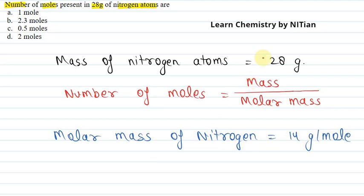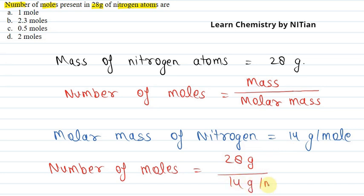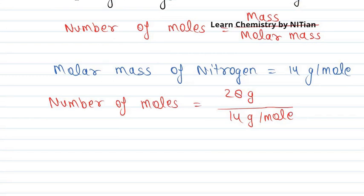Now we can calculate the number of moles. Number of moles equals given mass 28 grams divided by nitrogen's molar mass 14 grams per mole. The grams cancel, mole goes to the numerator, and 28 divided by 14 equals 2. So this becomes 2 moles. Therefore, 28 grams of nitrogen atoms contains 2 moles of nitrogen atoms.